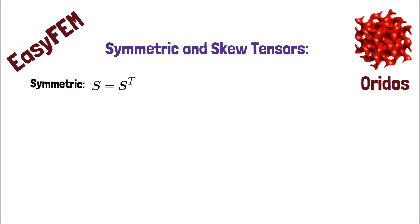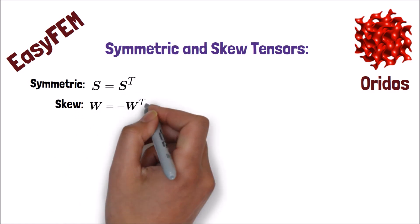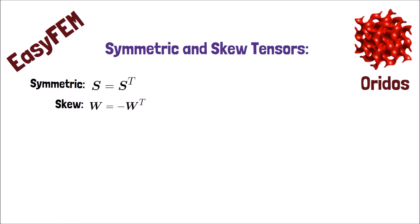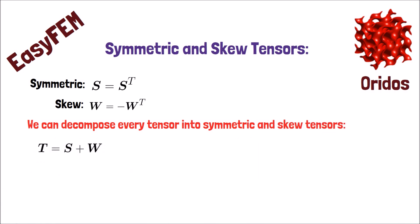It means all of its entries above the main diagonal are reflected into equal entries below the diagonal. On the other hand, a matrix is skew-symmetric if and only if it is equal to the negative of its transpose.